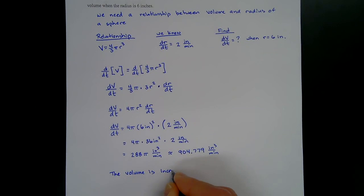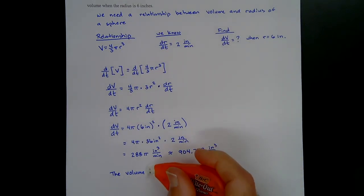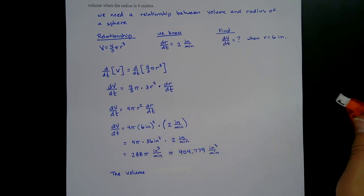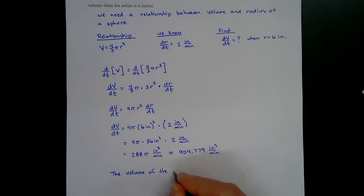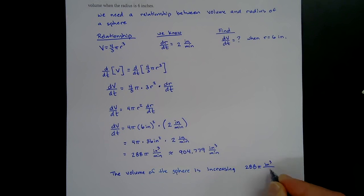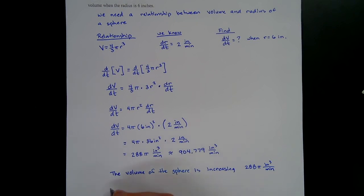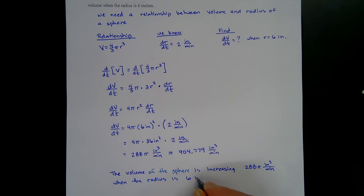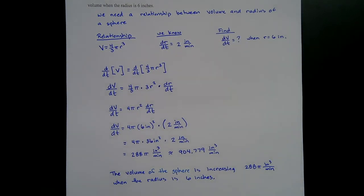We need to write a conclusion sentence. The volume of the sphere is increasing — we know it's increasing because the value is positive — at 288 pi inches cubed per minute when the radius is six inches. This will seem really difficult at first; don't be afraid to make mistakes and just start trying.